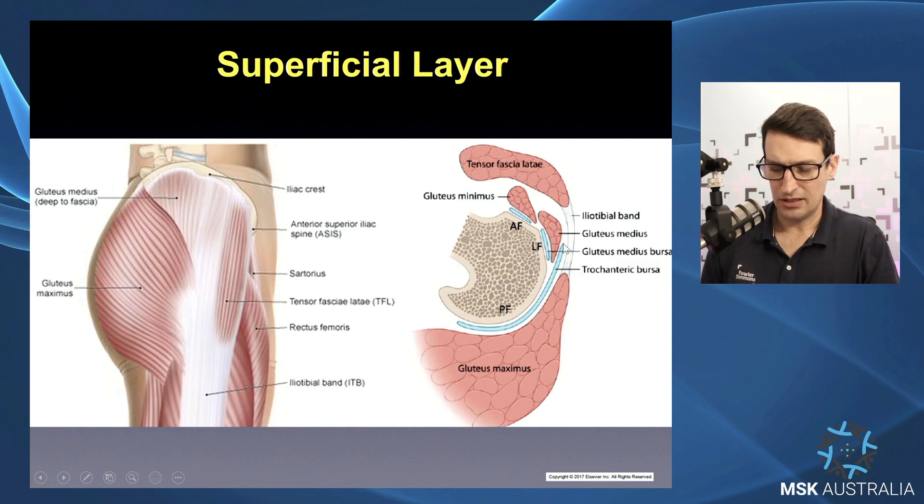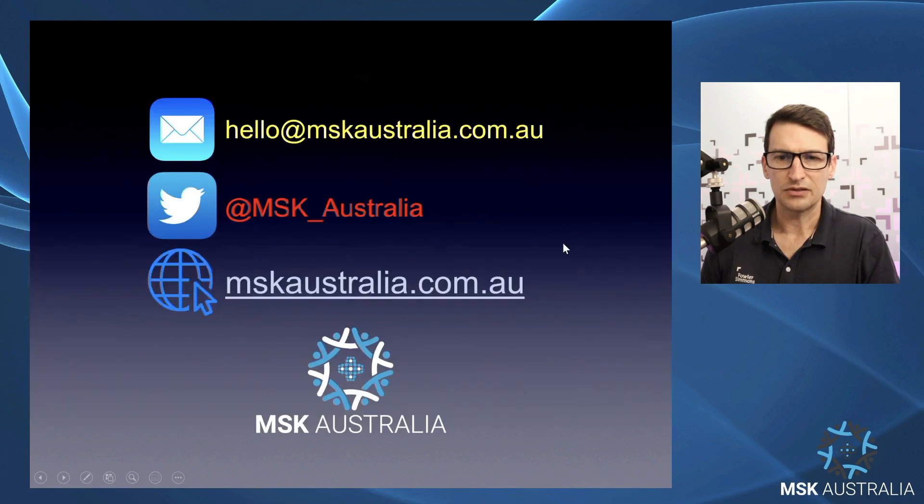Regarding bursa anatomy: we have our sub-gluteus maximus bursa or trochanteric bursa, and our sub-gluteus medius and sub-gluteus minimus bursae sitting under their respective tendons. That's the anatomy side of things, so we'll move on to live scanning and come back with pathology.